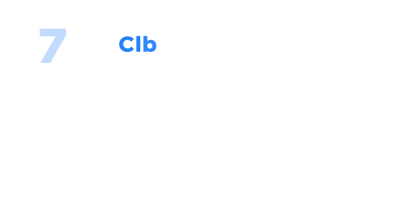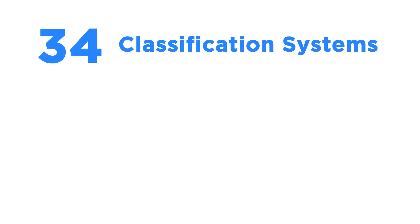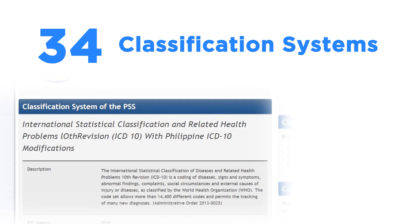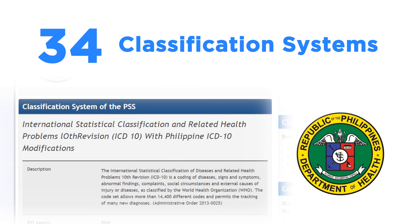Further, 34 classification systems are being utilized by other government agencies, which include, among others, the International Statistical Classification of Diseases and Related Health Problems, which is being used by the Department of Health.